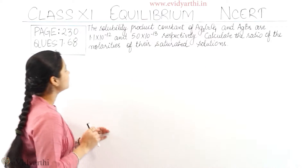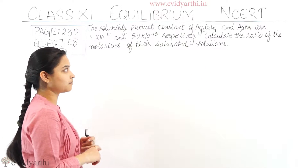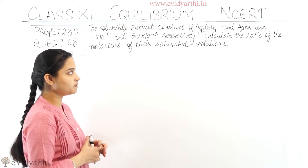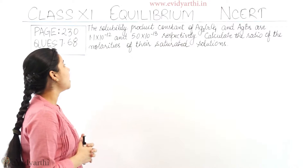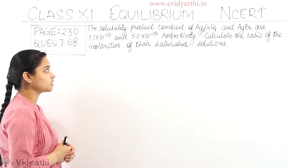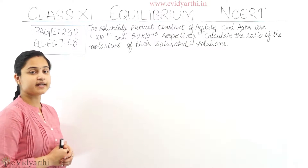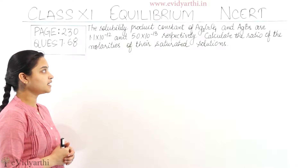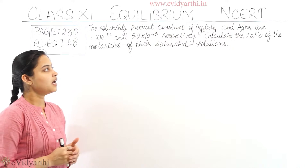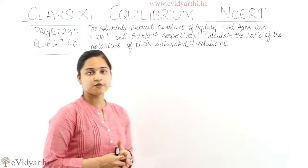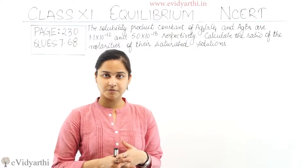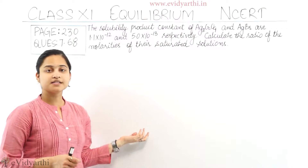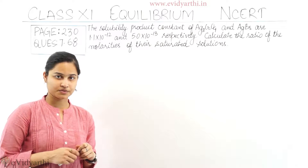The question is: the solubility product constant, that means KSP, of Ag₂CrO₄ (silver chromate) and AgBr (silver bromide) are 1.1×10⁻¹² and 5.0×10⁻¹³ respectively. Calculate the ratio of molarities of their saturated solutions. We have KSP values for silver chromate and silver bromide and we have to calculate the ratio of the molarities of their saturated solutions.